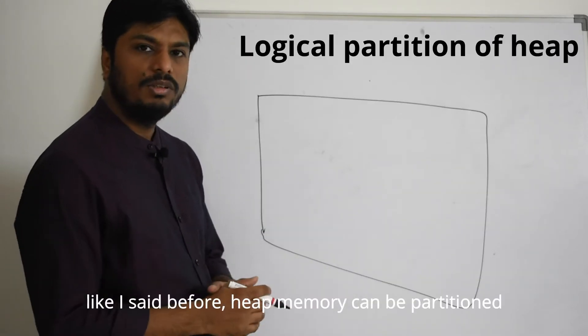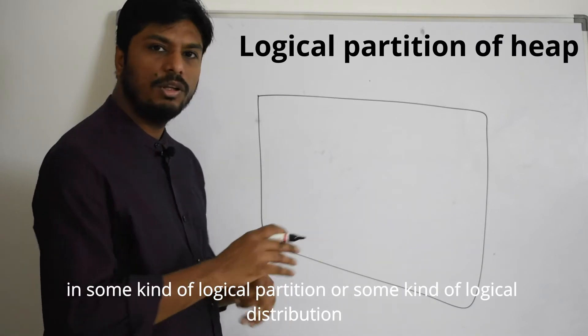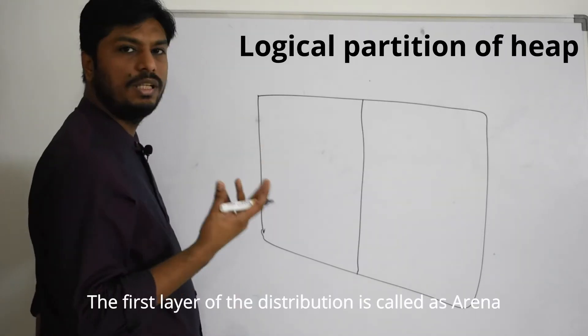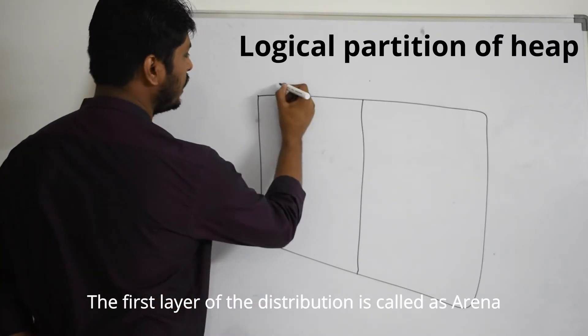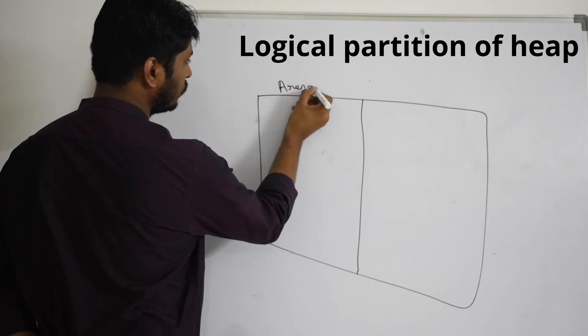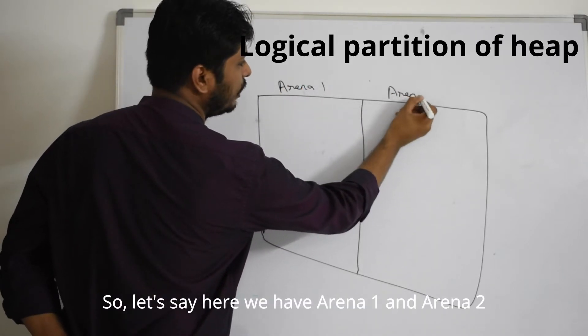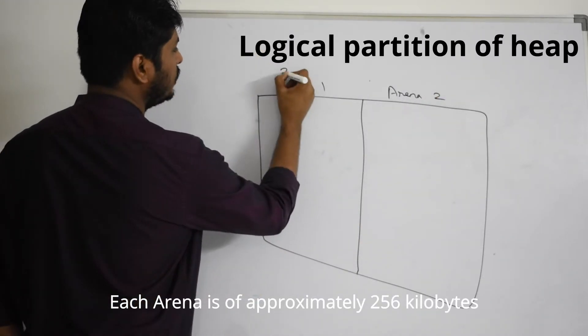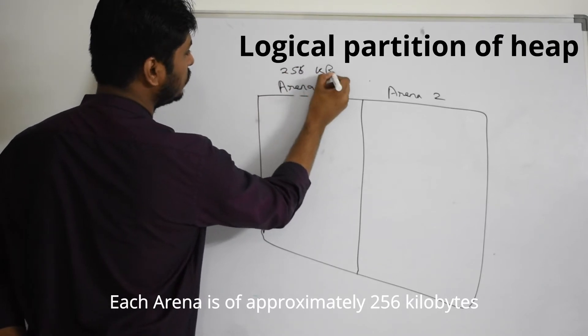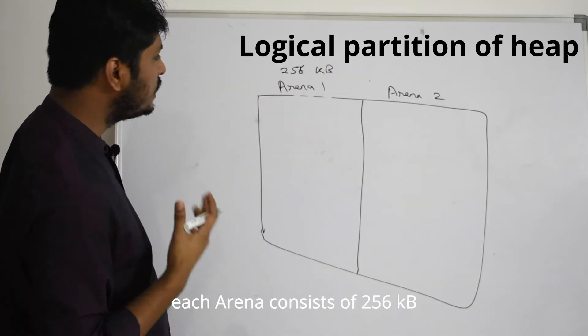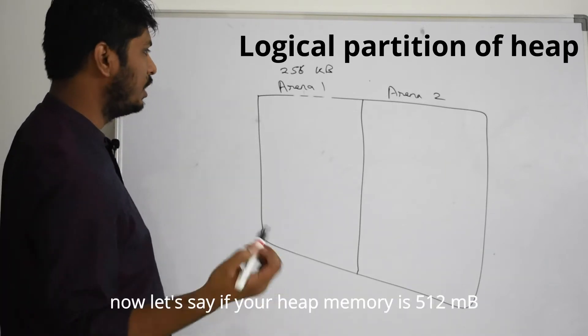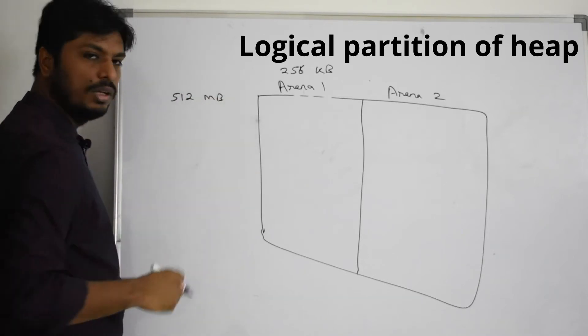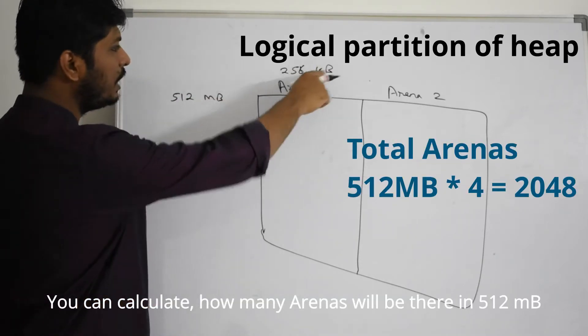Like I said before, heap memory can be partitioned in some kind of logical partition or logical distribution. The first layer of that distribution is called arena. Let's say here we have arena 1 and arena 2. Each arena is approximately 256 kilobytes. Let's say if your heap memory is 512 MB, you can calculate how many arenas will be there.